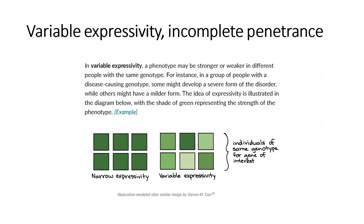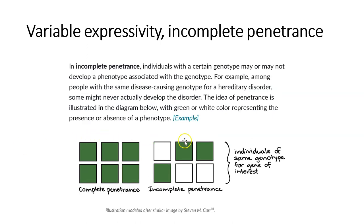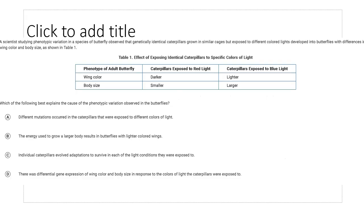Two more concepts: variable expressivity and incomplete penetrance. Variable expressivity means individuals with the same genotype can show a range of phenotypes — some might develop a severe form, some a milder form of a disease. Incomplete penetrance means a certain genotype may or may not develop the phenotype depending upon the environment. Complete penetrance means no matter what, you get the phenotype; with incomplete penetrance, you might show it, you might not. There's a practice problem available if you want to try it.